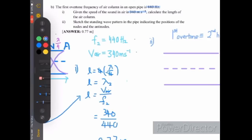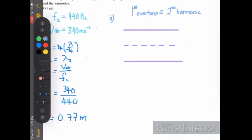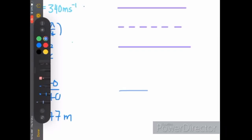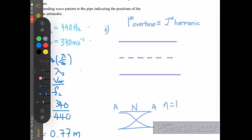Next question: sketch the standing wave indicating the nodes and antinodes. For reference, the fundamental frequency of an open pipe always has antinodes at both ends and a node in between. For the first overtone, which is equivalent to the second harmonic (n equals 2), there is an additional node inside. So we have antinodes at the ends, one node, another node, and antinodes between them. Antinodes are labeled at points of maximum amplitude, and nodes at points of zero amplitude.